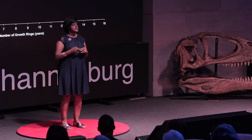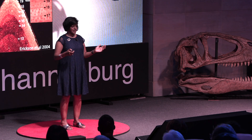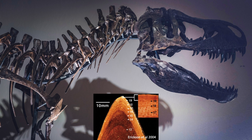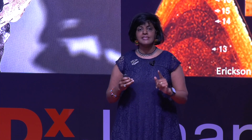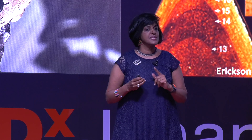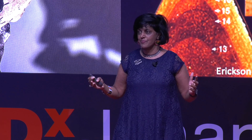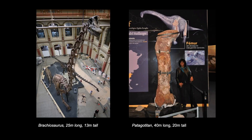Since then, this methodology has been refined and applied to many other dinosaurs. Today we have information about how long it took for different dinosaurs to grow up. For example, we know that T-Rex took 19 years to grow to its adult body size of 12 meters and 9 tons. But the T-Rex is really quite puny compared to the real giants of the Mesozoic — the sauropod dinosaurs.